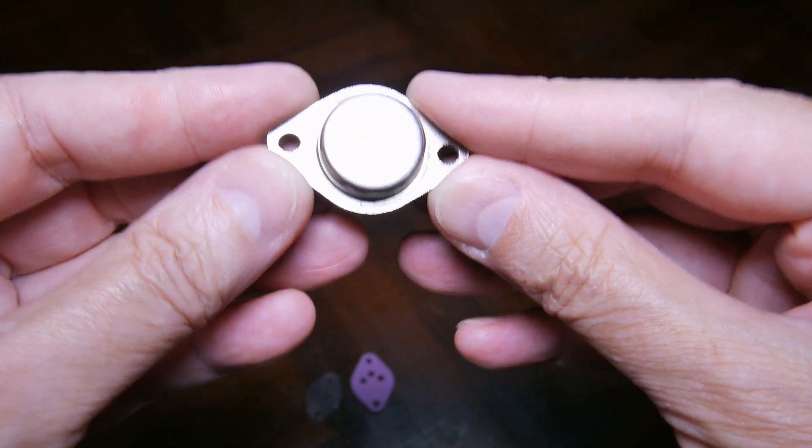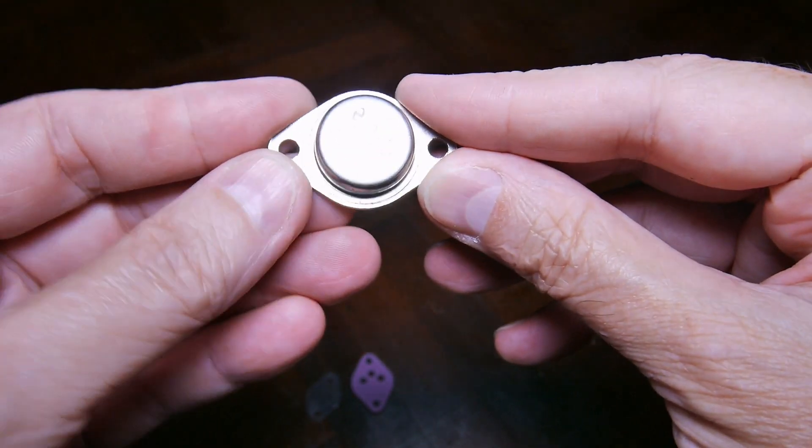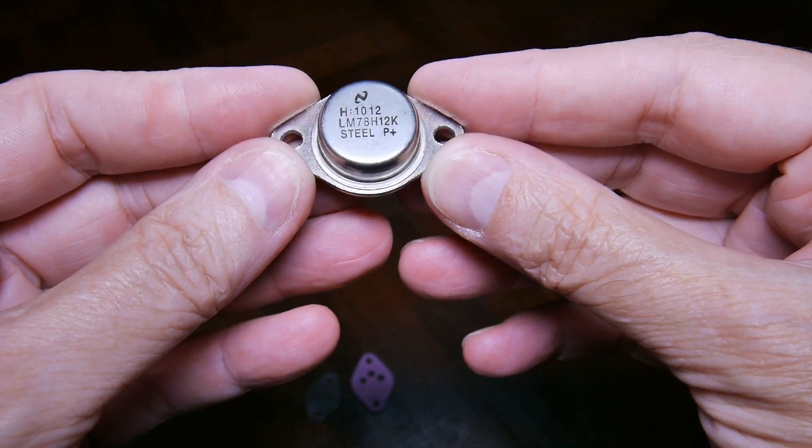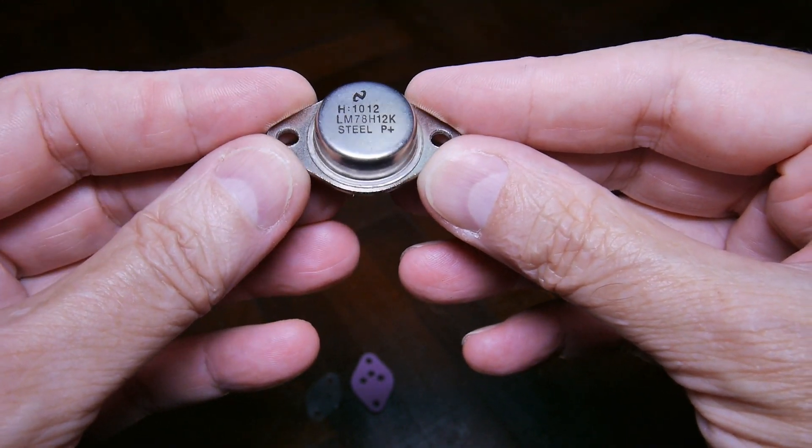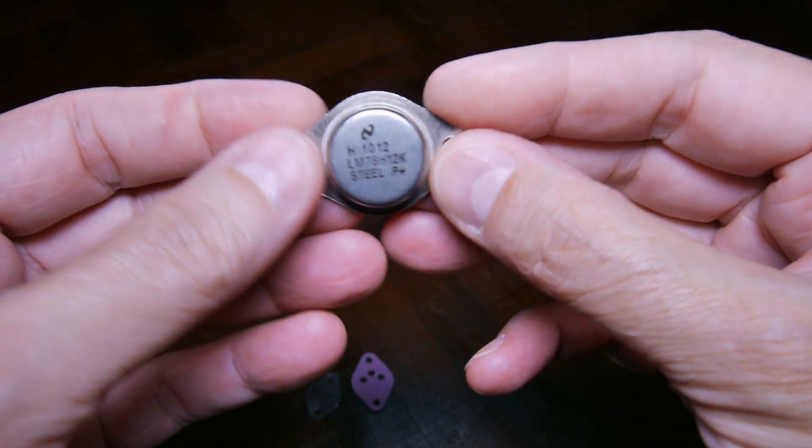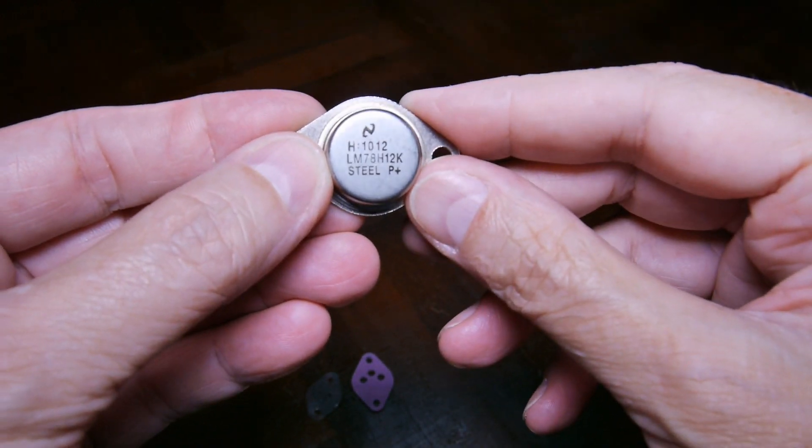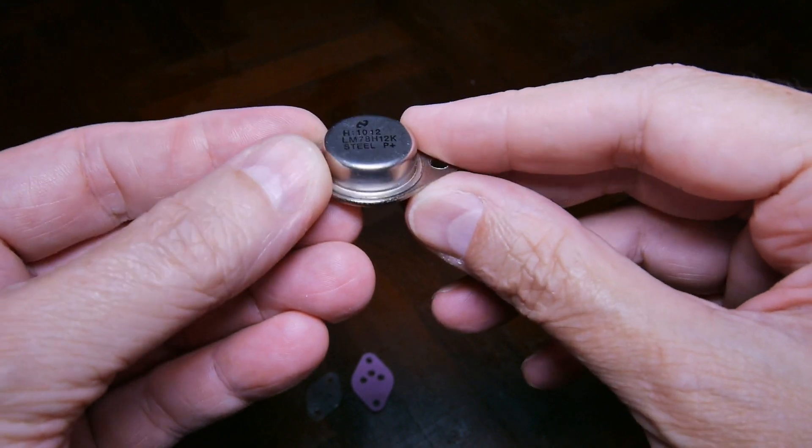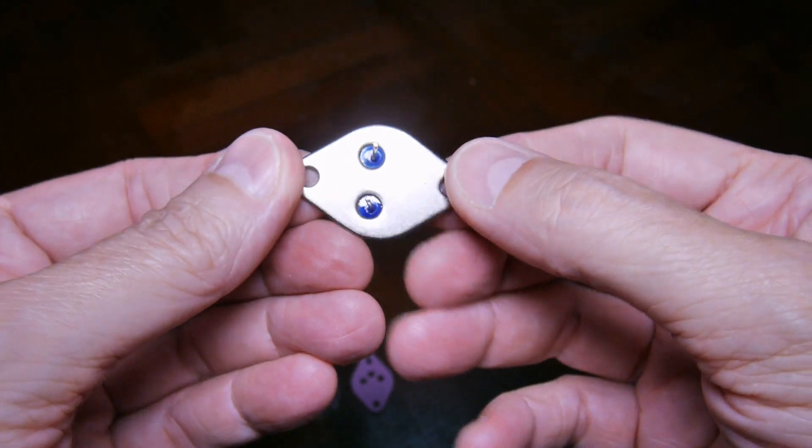Today I need to mount this device onto an electrical project that I'm making. This is called a TO3 package, this configuration with this style. This happens to be a 12 volt voltage regulator but it could be a transistor because they also come in the same package.